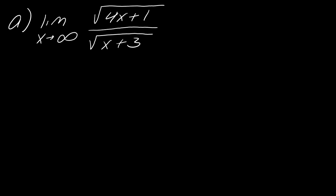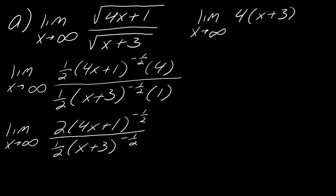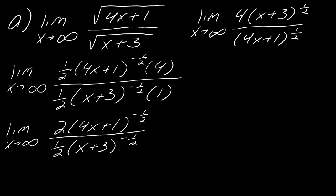So what I want you to do is go ahead and take the derivative, and I'll take it as well. I've gone ahead and took the derivative of the top and bottom, and now if I were to simplify this a little bit more, I could write this as the limit as x approaches infinity. Taking the one-half and bringing it up to the top gives a coefficient of 4, then bringing the negative exponent up gives x plus 3 to the one-half, and the other negative exponent gives 4x plus 1 to the one-half. If I try to evaluate as x goes to infinity, I still have the same problem - this is still going to end up with infinity over infinity.